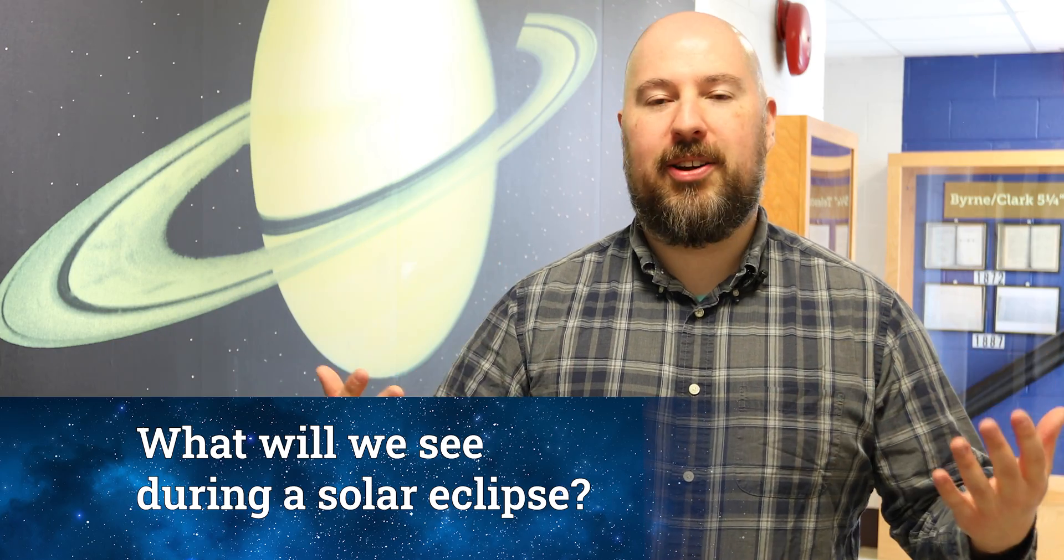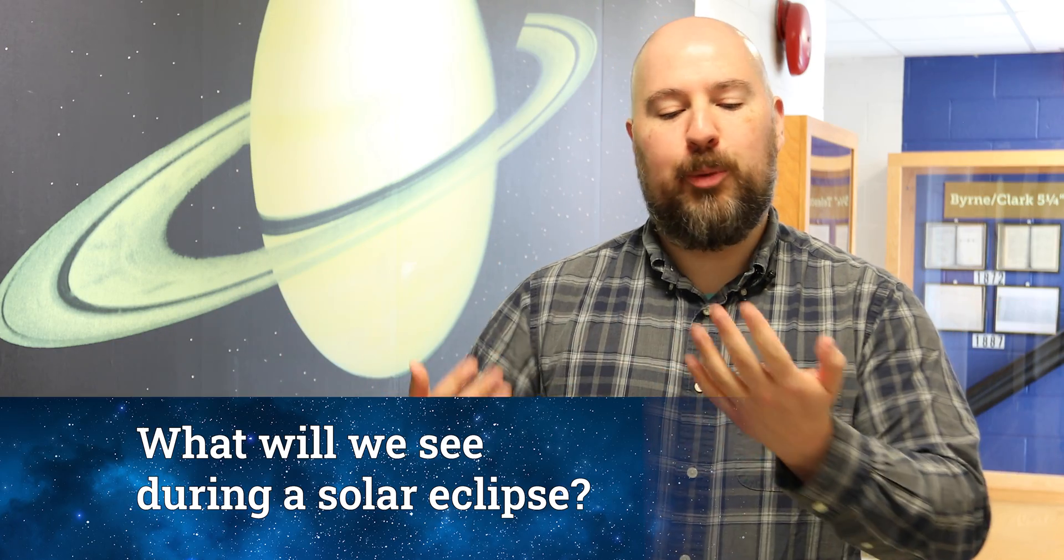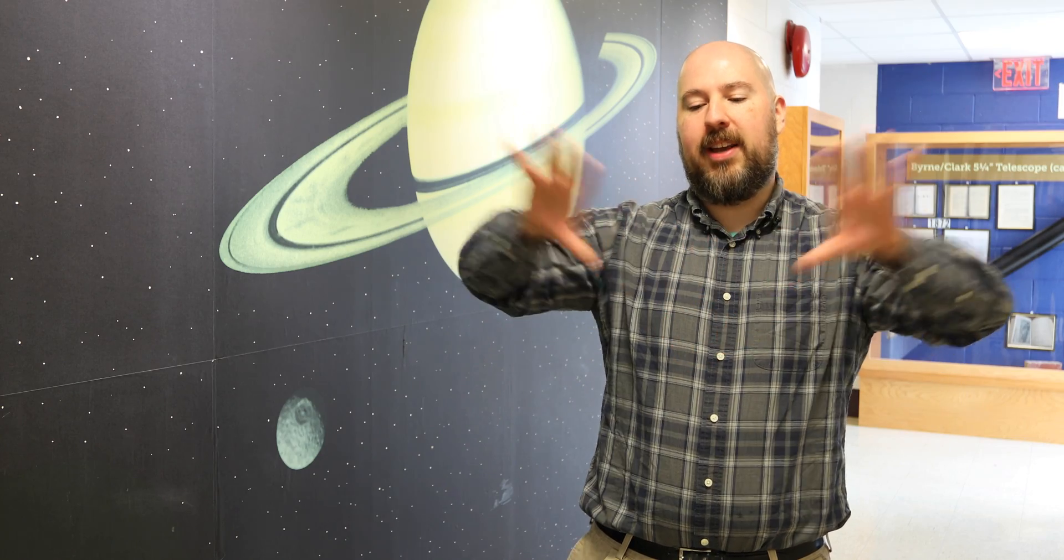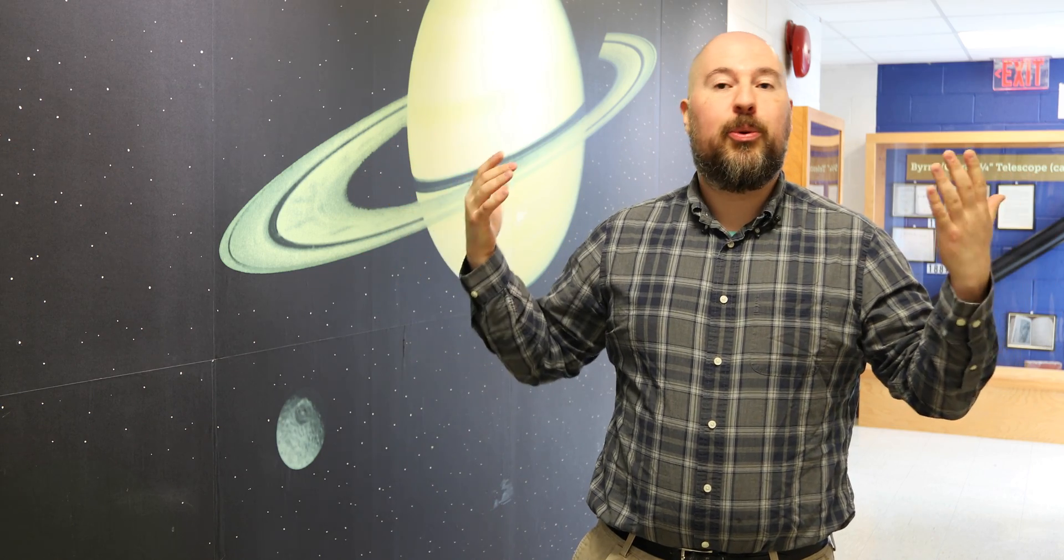If you have full totality, the sun is completely blocked. You block out the main disc of the sun, the main shape. But that allows you to see the extended atmosphere of the sun. We call that the solar corona. It's going to look like a faint extrusion coming out from behind the moon, and you can only see that because you're blocking out the light from the sun.